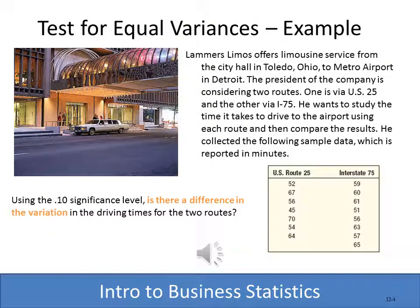When working with two samples we're comparing the variance, not the means, when using the F. In this example, a limousine company has two routes to the airport: one via US 25 and the other via Interstate 75. We have samples of how long each route takes, and we want to know if there is a difference in variation — is one route more likely to be tied up with traffic? We'll use the 0.10 significance level and compute the F statistic.